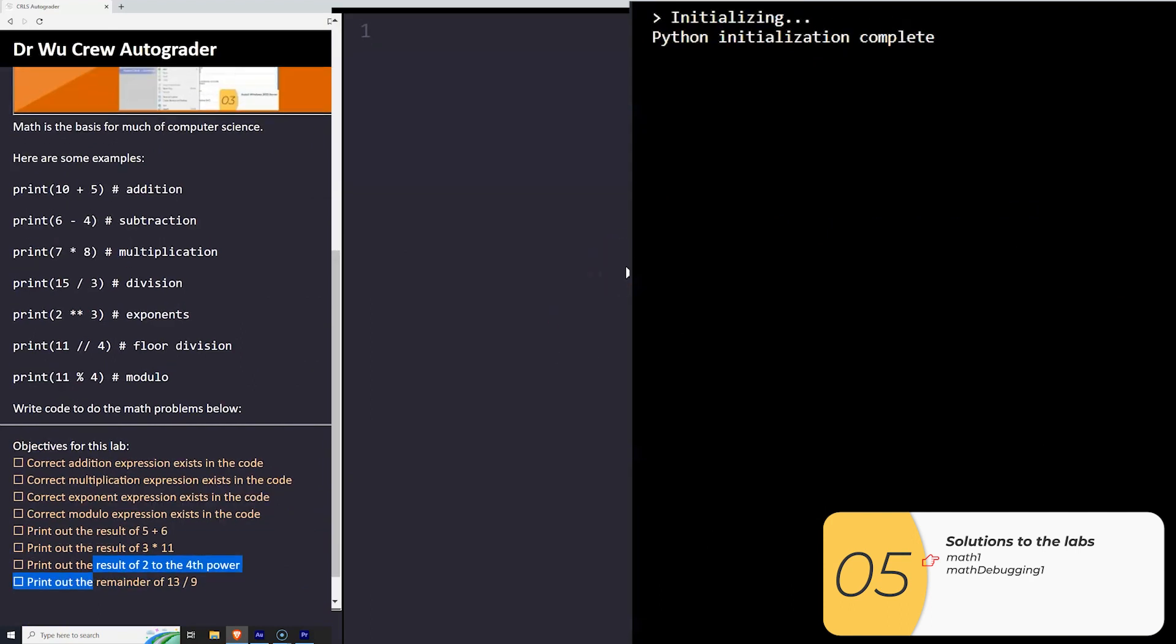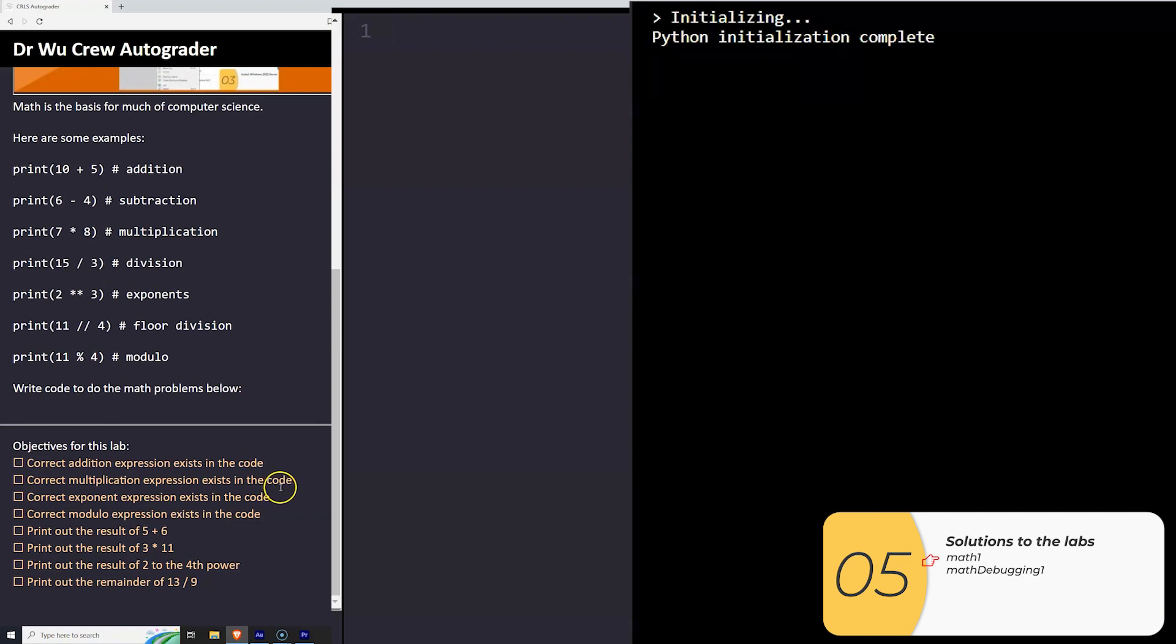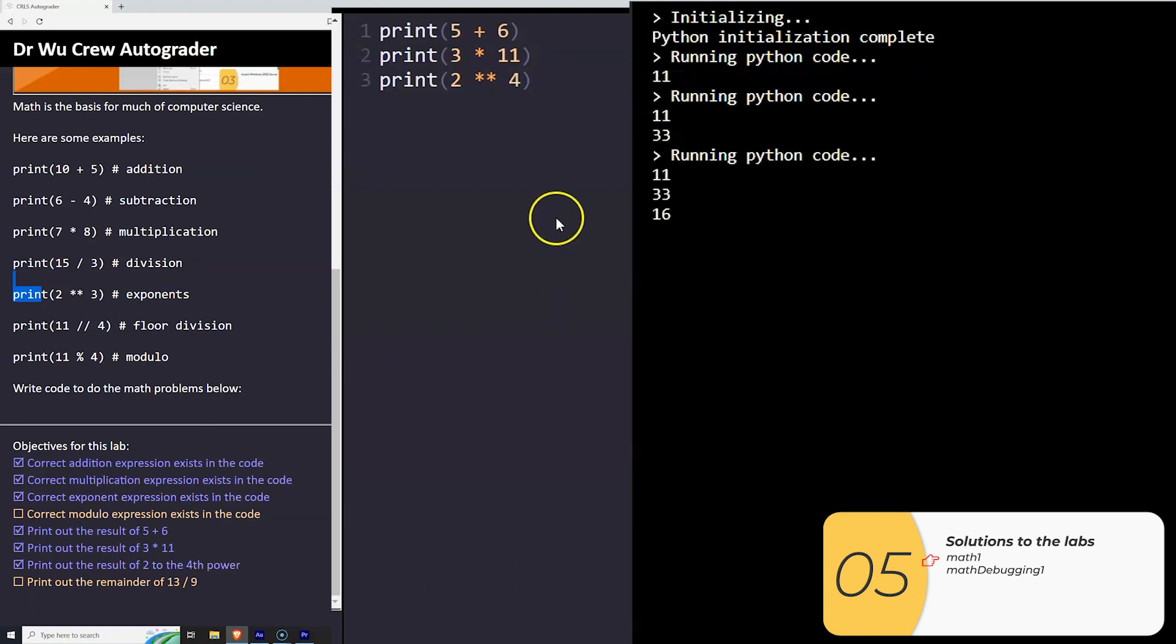All right, so for this first one, we're just asking you to do some math. We're asking you to do 5 plus 6, 3 times 11, 2 to the 4th, and the remainder of 13 divided by 9. So if you look at the examples, hopefully these are not too hard. I'm doing them right now. You may be wondering why I'm putting spaces around the operators, around the times and the pluses. And that has to do with a Python coding convention. Spaces around the operators make these more readable. So that's why they're there. So I'll run them, and everything runs, and it's good.